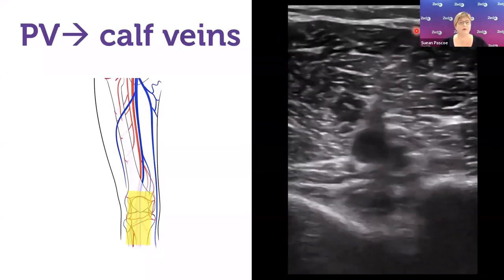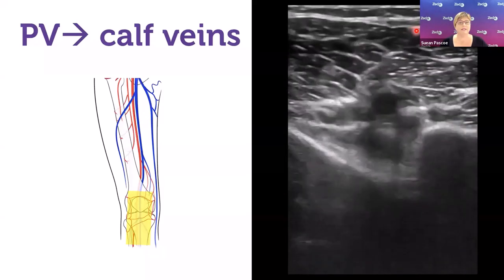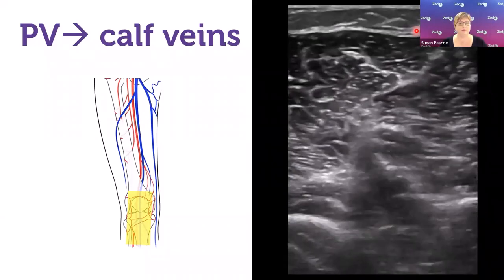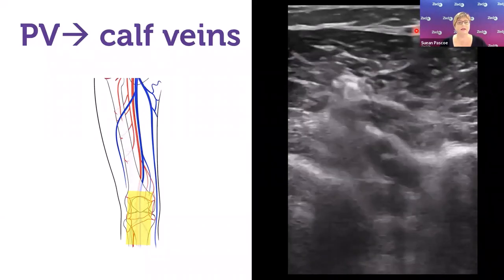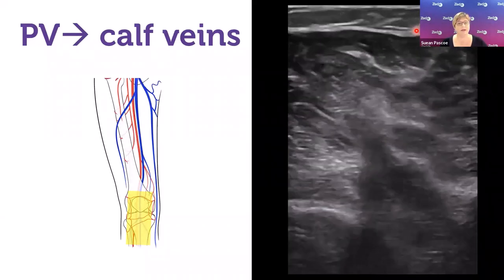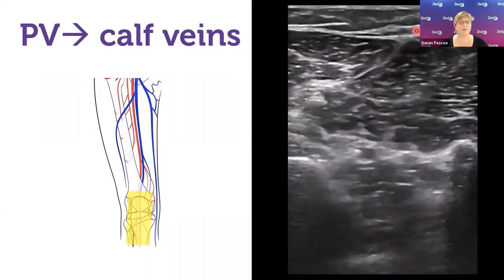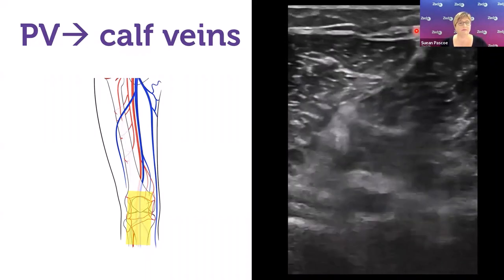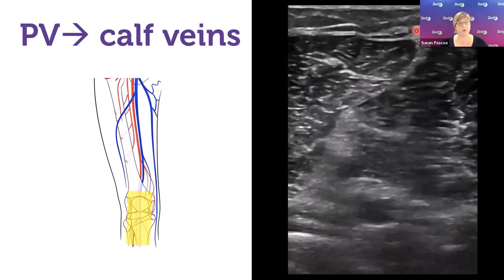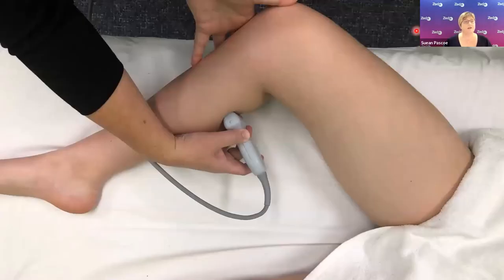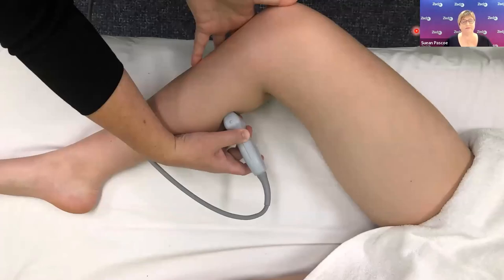As the vessel dives deep into the muscles it divides into the calf veins. For a point-of-care study, stop at about the top of the belly of the gastrocnemius muscles — that's far enough to reach the trifurcation.